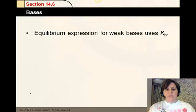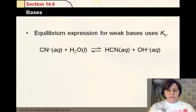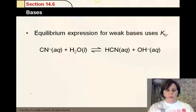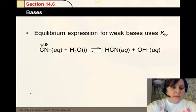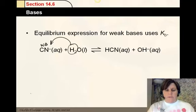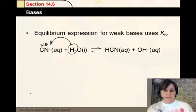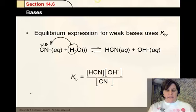Equilibrium expressions for weak bases using KB. So here's an example of a weak base. You can see it's acting like a base because it's taking hydrogen from water and producing HCN, which is an acid, and OH negative. Again, just like a Ka problem, products over reactants, and there it is there. We call this relationship, however, KB.